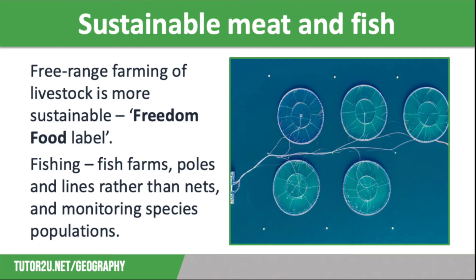Turning to sustainable meat and fish: many people argue that to be truly sustainable, we need to stop eating meat entirely due to the environmental costs involved, particularly when we think about livestock that is kept inside and reared intensively with grain. However, grazing livestock outdoors so they are pasture-fed is a much more sustainable way of producing meat, and sheep and cattle can actually be used to maintain the landscape. Free-range farming, where animals are able to spend most of their time outdoors, is seen as a much better way of farming, which is also kinder to the animals involved.